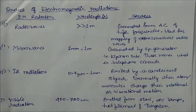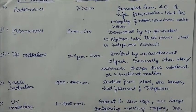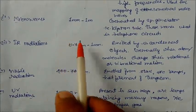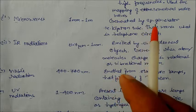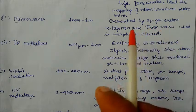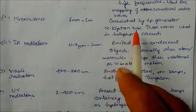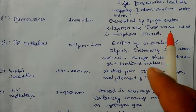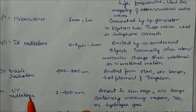Microwaves have a wavelength range of one millimeter to one meter, and are generated by special generators like the klystron tube. These waves are used in telephone circuits.